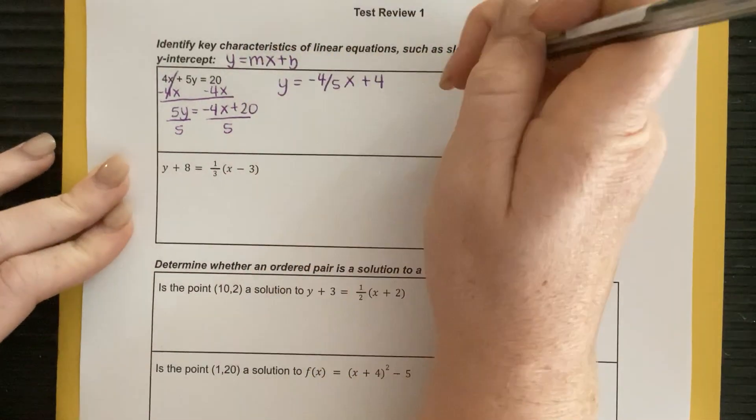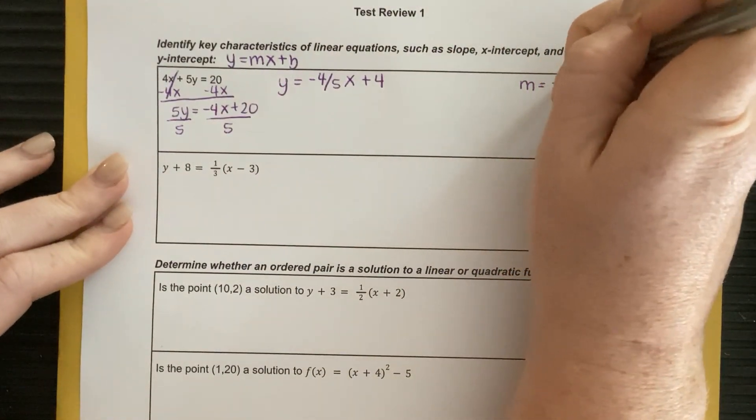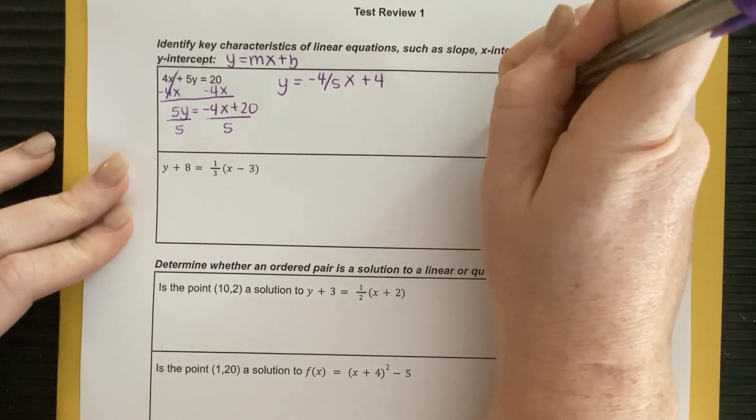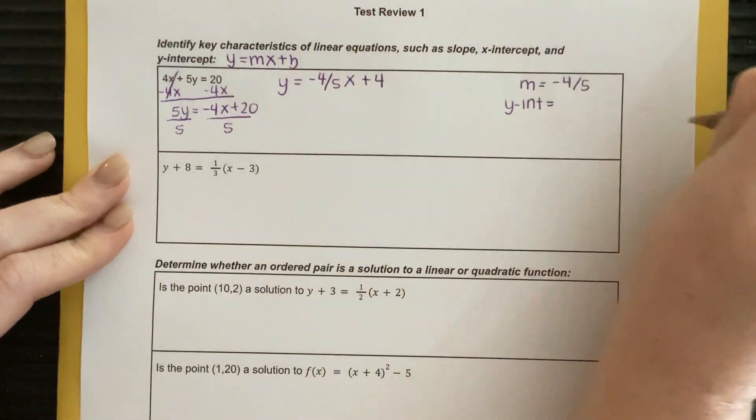All right? So, just by doing that, you can tell me what the slope is. The slope is negative 4 fifths, and our b, which is our y-intercept, is going to be 4.